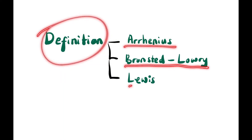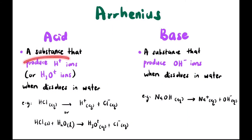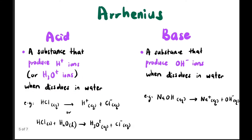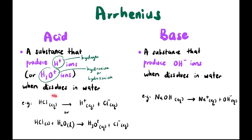We will start with definitions based on three scientists. According to Arrhenius, an acid is a substance that produces H⁺ ions or H₃O⁺ ions when dissolved in water — where H⁺ is the hydrogen ion and H₃O⁺ is the hydronium ion. For example, HCl in aqueous solution produces H⁺ and Cl⁻.